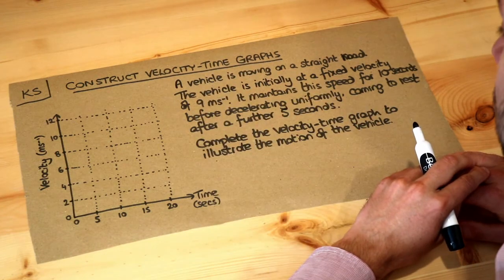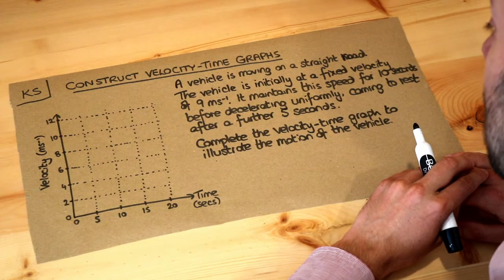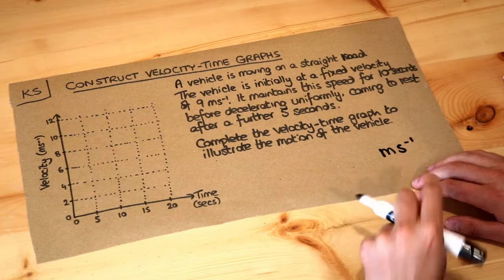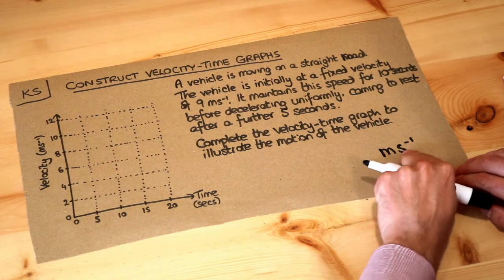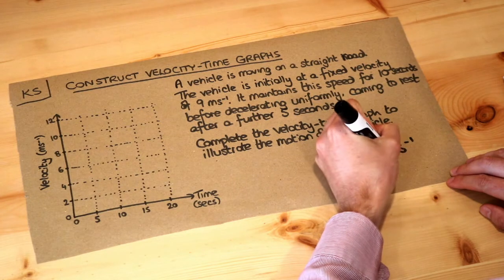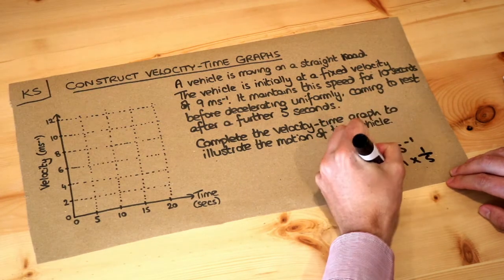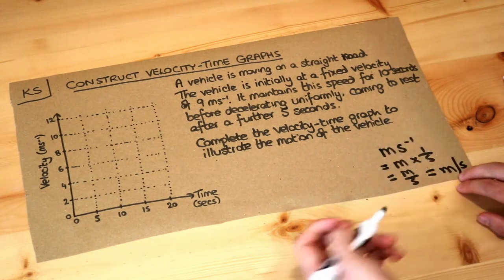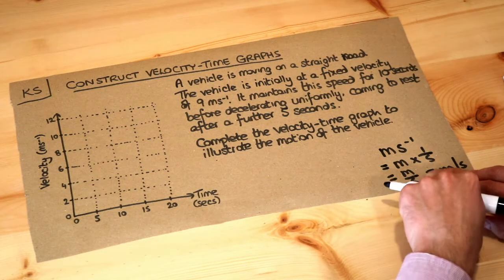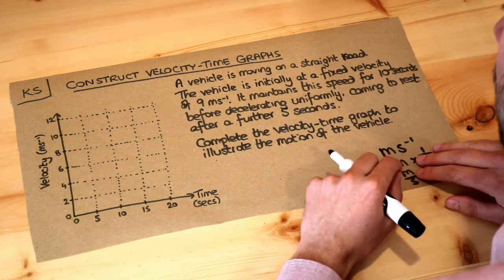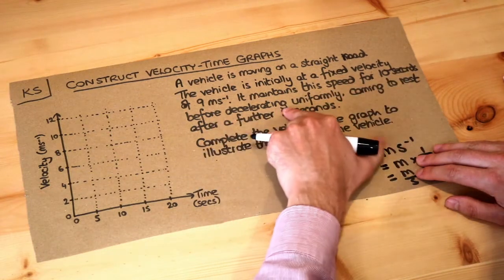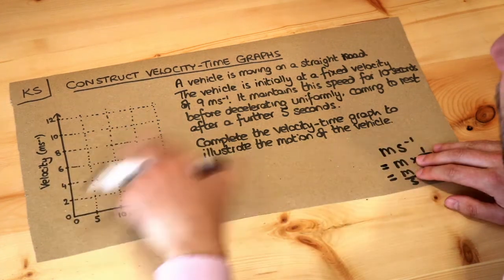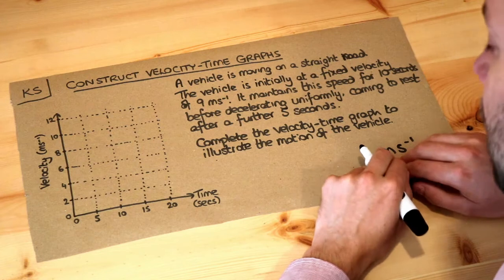A vehicle is moving on a straight road, initially at a fixed velocity of 9 meters per second. By the way, when we have a unit like ms to the minus 1, think about what a power of minus 1 means — that's 1 over s, so m times 1 over s, which is m over s, written as m/s, which is just meters per second — how many meters you're traveling each second. It maintains this speed for 10 seconds before decelerating uniformly, coming to rest after a further 5 seconds. We want to complete the velocity-time graph to illustrate the motion of the vehicle.